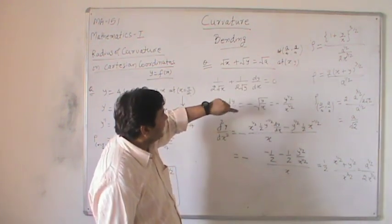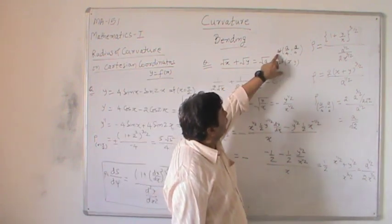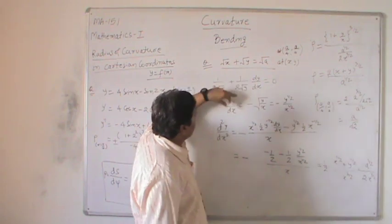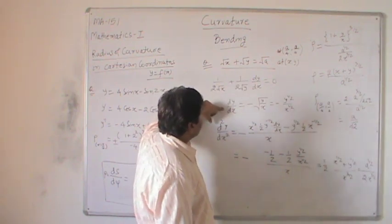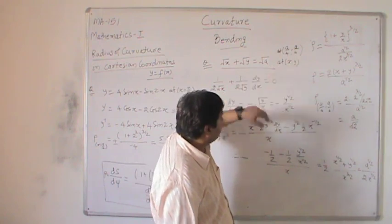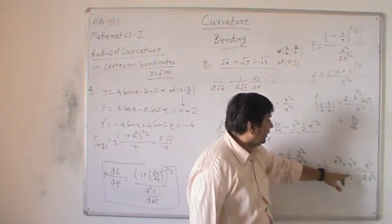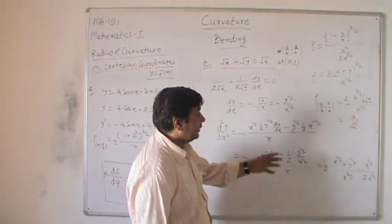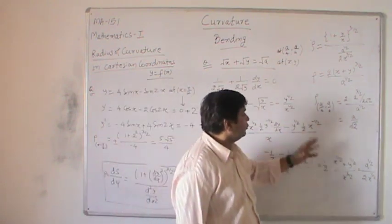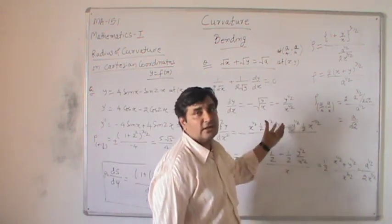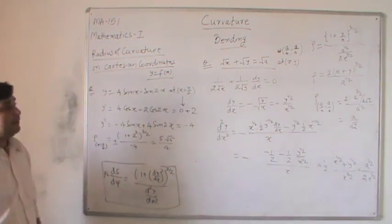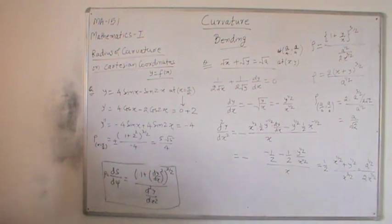Alternatively, to find the radius of curvature at point (a/4, a/4), you can first calculate the first and second derivatives individually at that point, then substitute those particular values directly into the formula to get the value a/√2.